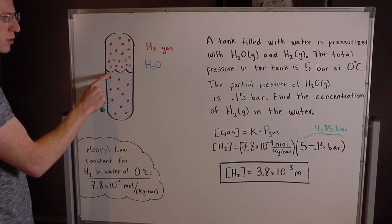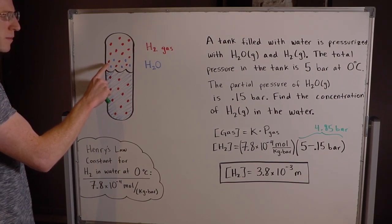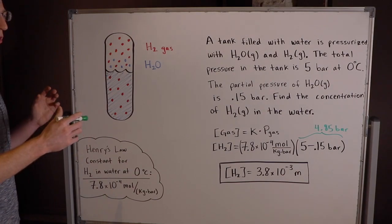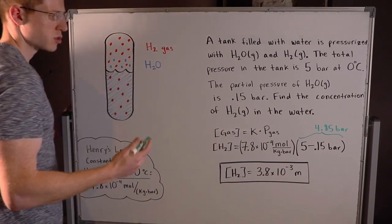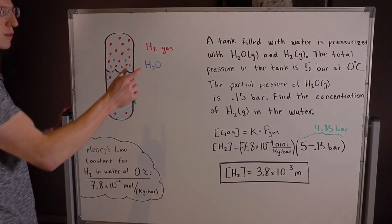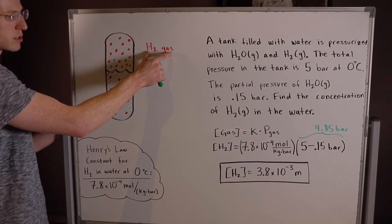The small 0.15 bar contribution by the water vapor is simply because of the natural vapor pressure above the surface of this liquid here. Some of the water molecules are evaporating and becoming water vapor and they're contributing just a very small partial pressure into the total pressure here. So if we want to find the concentration of H2 gas in the water we're going to have to focus on that gas for our Henry's Law equation.